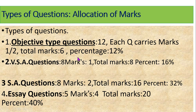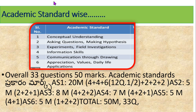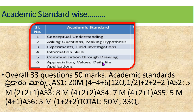Now, academic standards. The first academic standard is conceptual understanding. Second is asking questions and posing of questions, making hypothesis. Next, experiments and field investigation. Then findings and outcomes. Information skills. Communication through drawing. Appreciation, values, and daily life applications. These are the 6 academic standards.